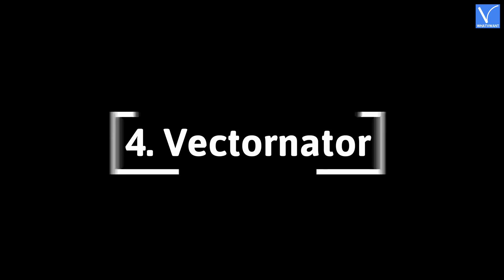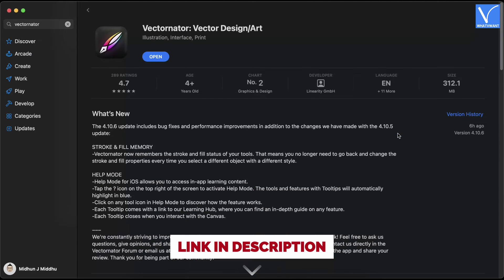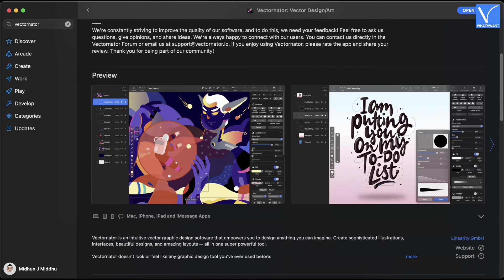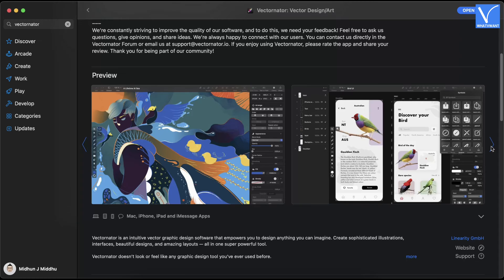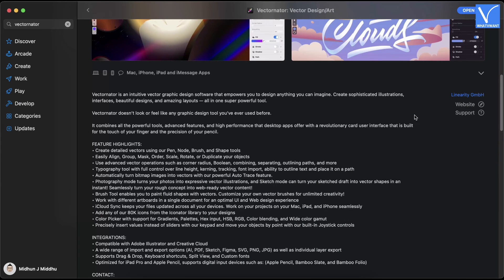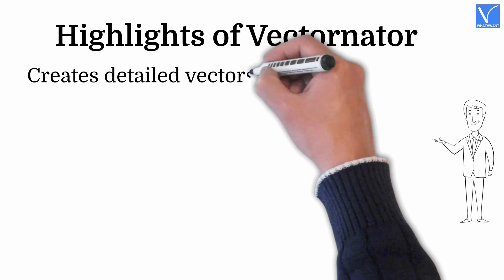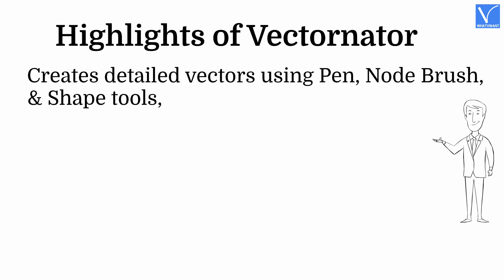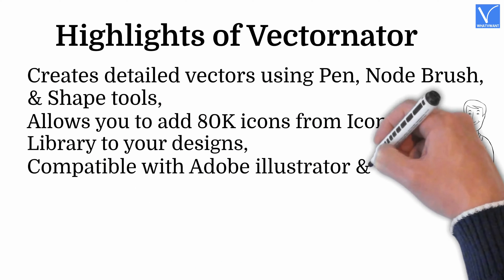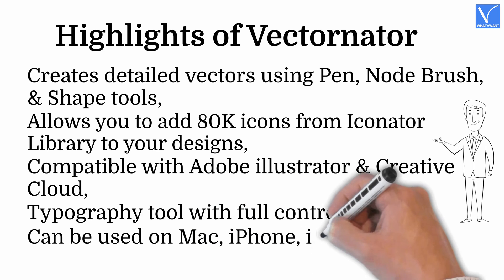Number four: Vectornator. Vectornator is a free vector software available for Mac users. It supports creating and editing Illustrator files with ease and has a very clean and professional user interface. Vectornator can be used to edit CDR files after converting them into Illustrator format. Even though it is free software, it provides all the professional features available in premium software. Highlights: create detailed vectors using pen, node, brush, and shape tools; add ADK icons from the Iconator library; compatible with Adobe Illustrator and Creative Cloud; typography tool with full control; available on Mac, iPhone, iPad, and iMessage apps.